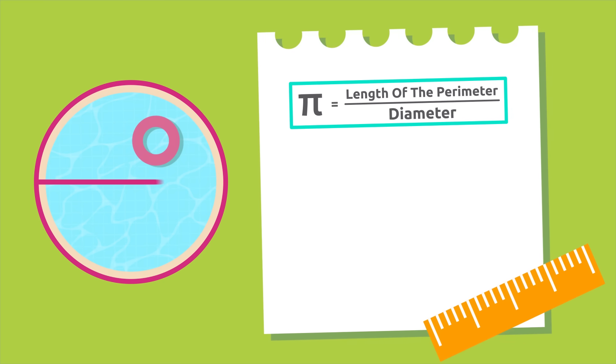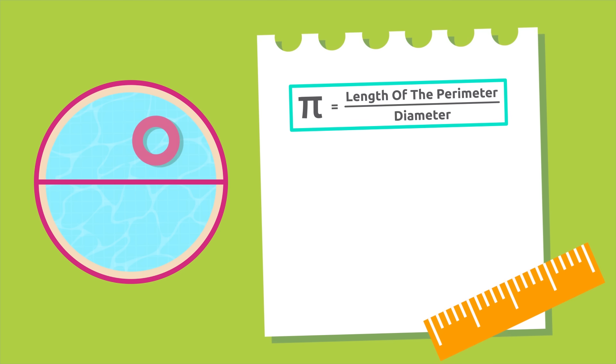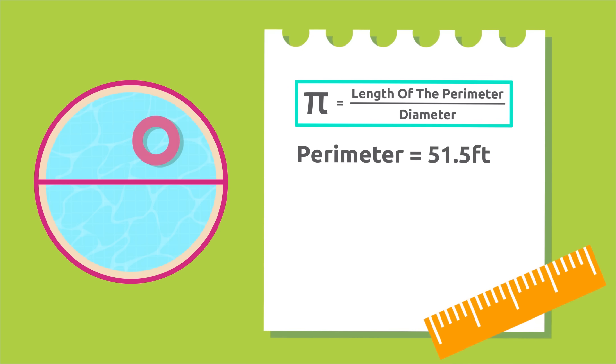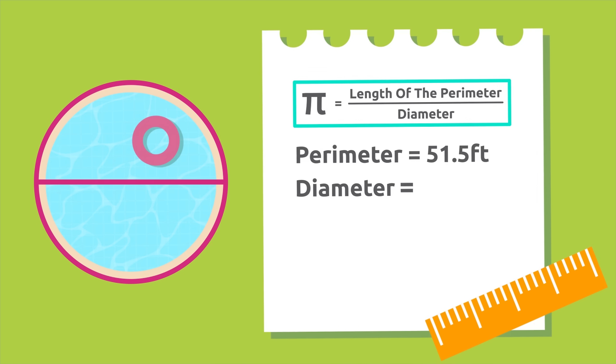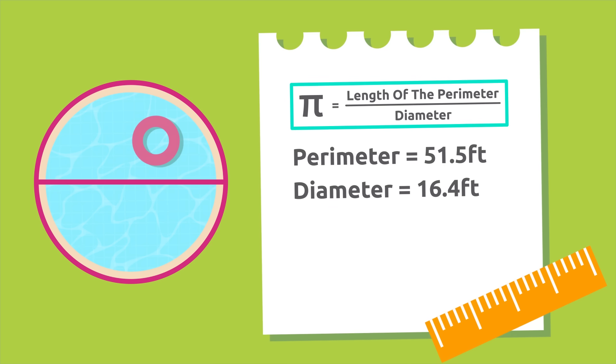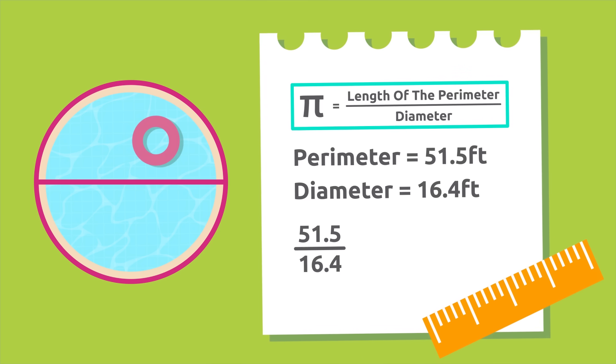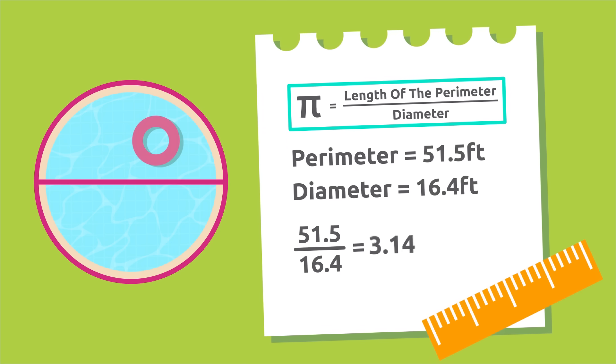Let's see. The perimeter of this circular swimming pool is 51.5 feet and its diameter is 16.4 feet. If we divide 51.5 by 16.4, we'll get 3.14.